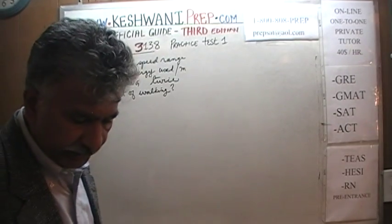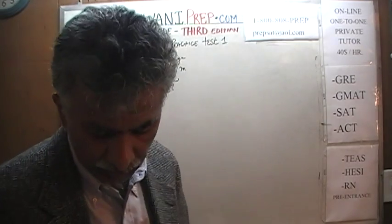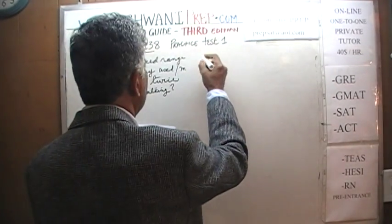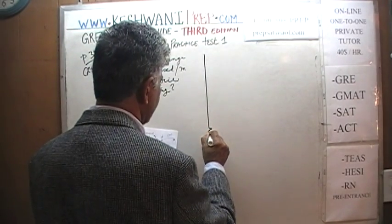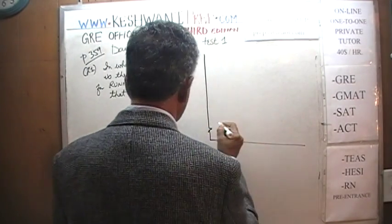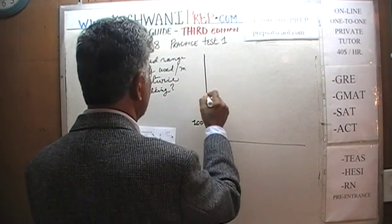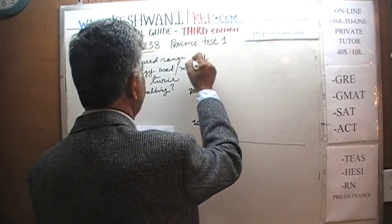Turn to page number 359. Take a look at the problem there and you will see that there is a chart that accompanies it. I am going to reproduce the chart, but not in its entirety — only the parts that we need, only the parts that are relevant. So our chart is going to start out not at zero, but about 100, and then we are going to go up to 200 and 300.